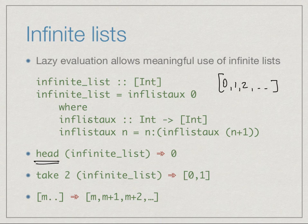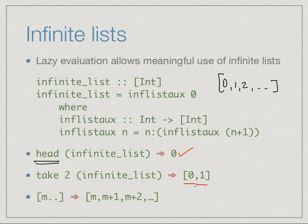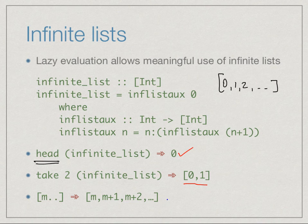For instance, if we take the head of this infinite list, it only needs to generate the first element. Once it expands the function once, it finds 0 followed by the infinite list starting from 1, and since it has the first element it can terminate. Similarly, taking the first two elements applies the definition twice and returns [0, 1]. The list range notation m.. means the infinite list m, m+1, m+2, and so on.